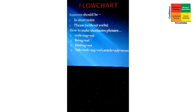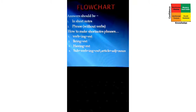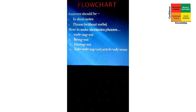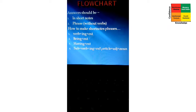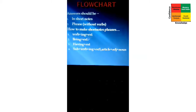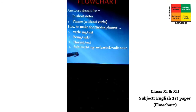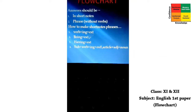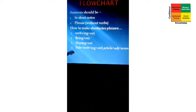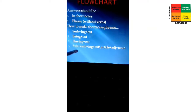Number three: if we get 'have,' 'has,' or 'had,' then we will write having plus extension — that is, the rest of the sentence. Number four: subject plus verb plus -ing plus extension, or article plus adjective plus noun. Here we have to remember which subject it is — this subject is something different from the given subject of the text. We will understand it when we practically do it.